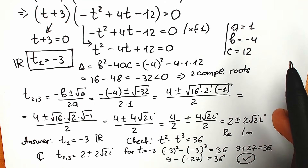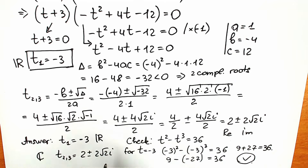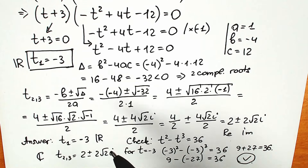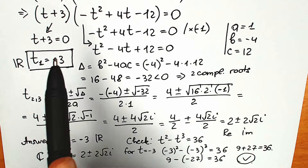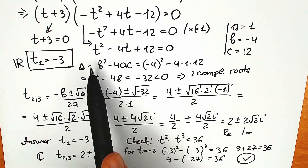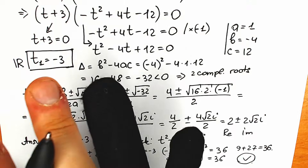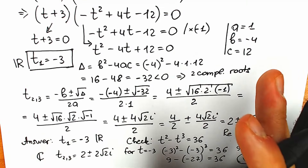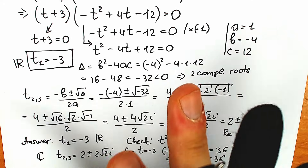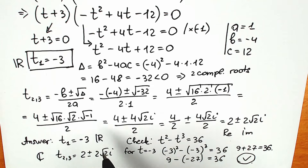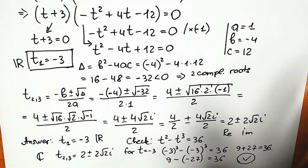One more important point: a lot of students try to solve this by inspection and find t equals minus 3, but then forget about the second branch with the complex roots. You can't say you've solved the equation completely unless you account for all roots. Every time you have an equation, scan the highest power — that tells you how many roots to find.